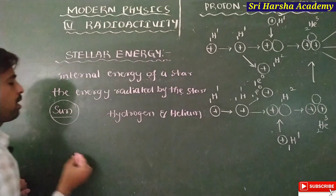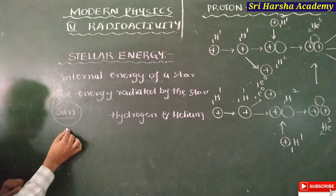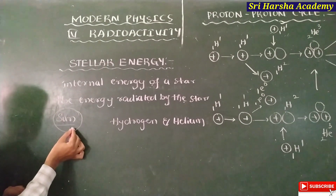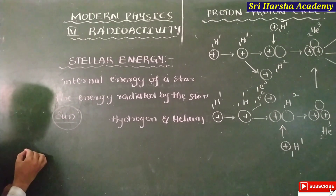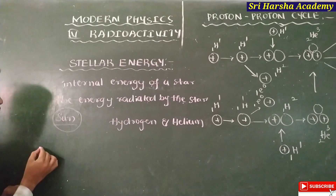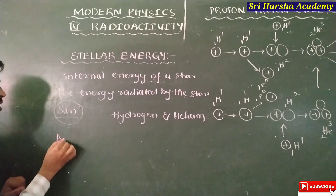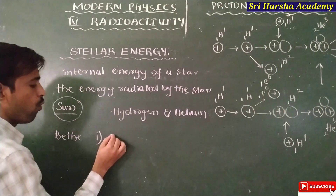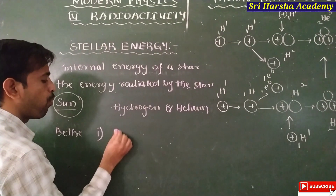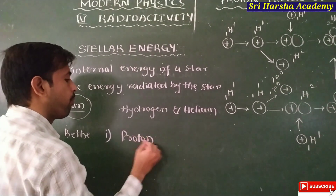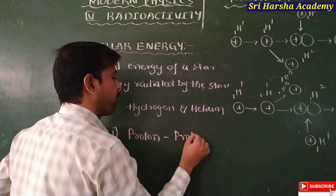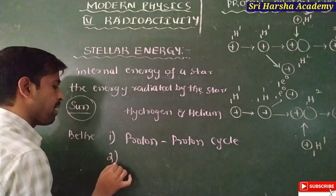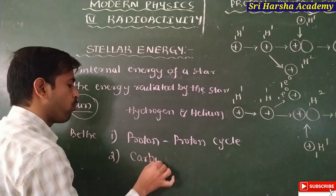Nuclear fusion is not possible at room temperature — it will be possible at high temperature, approximately the sun's temperature. In this stellar energy, a scientist explained it with the help of two cycles: one is the proton-proton cycle, and the second one is the carbon-nitrogen cycle.